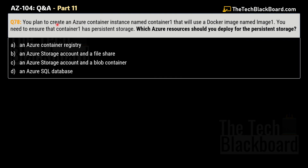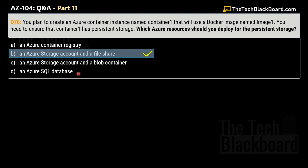Question 78 says that you plan to create an Azure Container Instance named container1 that will use a Docker image named image1. You need to ensure that container1 has persistent storage. Which Azure resource should you deploy for the persistent storage? Options are: A) Azure Container Registry, B) Azure Storage Account and File Share, C) Azure Storage Account and Blob Container, D) Azure SQL Database. The correct answer is Option B: Azure Storage Account and File Share.